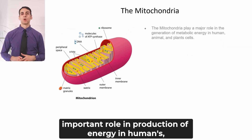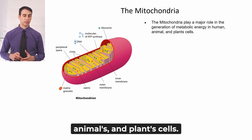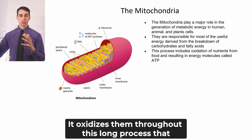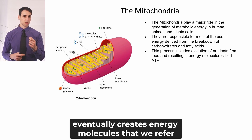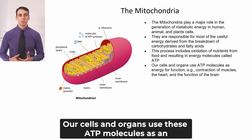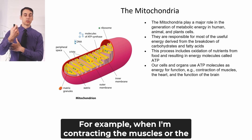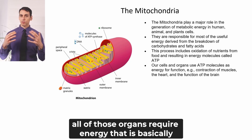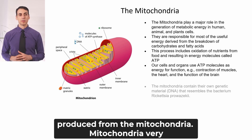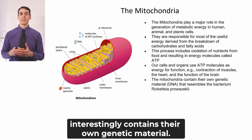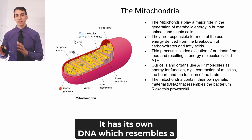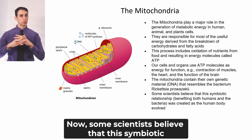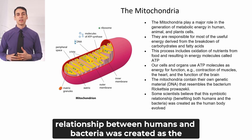The mitochondria has an important role in production of energy in both humans, animals, and plant cells. It essentially breaks down nutrients, such as carbohydrates or fatty acids, and oxidizes them through a long process that eventually creates energy molecules we refer to as ATP. Our cells and organs use these ATP molecules as energy for function — for example, when contracting muscles, the heart pumping, or the brain functioning 24/7. Very interestingly, mitochondria also contain their own genetic material — their own DNA — which resembles the bacterium Rickettsia prowazekii. Some scientists believe this symbiotic relationship between humans and bacteria was created as the human body evolved.